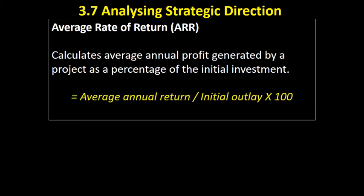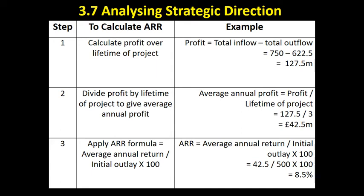To calculate it we use a formula with three steps, which I went over in the prior video. First, we calculate the total profit over the lifetime of the project — in our example, £127.5 million over a three-year lifespan. Then we work out the average profit per year: £127.5 million divided by three gives £42.5 million. Finally, we divide the average annual profit by the initial outlay and multiply by 100, giving an average rate of return of 8.5 percent.